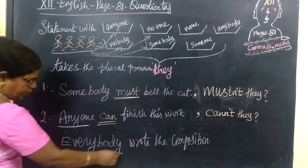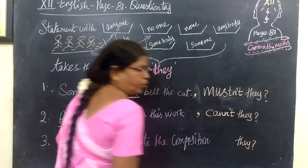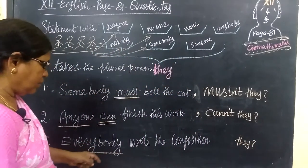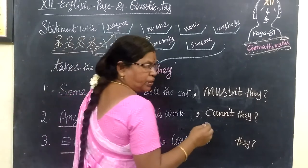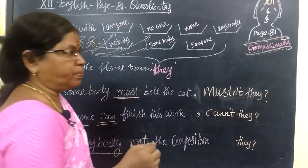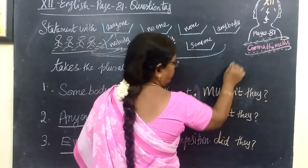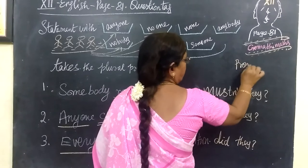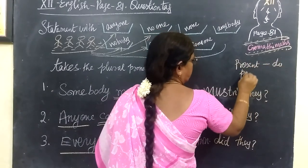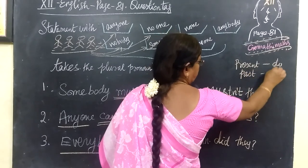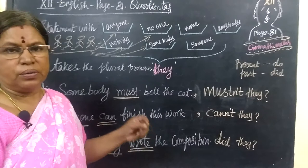Everybody — everybody means at the end you should write the plural pronoun 'they,' and you see the verb. The verb is 'wrote.' Wrote means past tense. If it is past tense, you should write 'did.' For present tense you use 'do,' and for past tense you use 'did.'